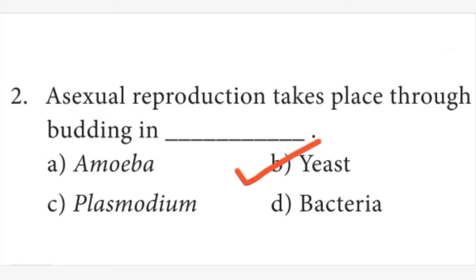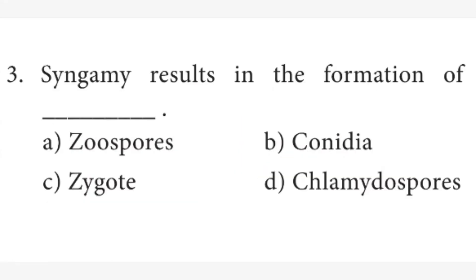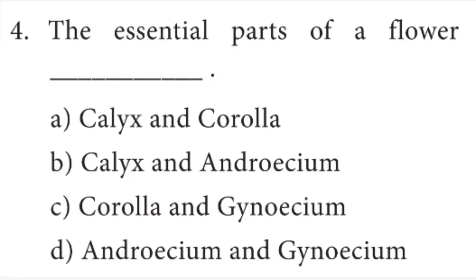Asexual reproduction by budding occurs in yeast. Third question: syngamy results in the formation of dash. Answer is C option, zygote. Syngamy results in the formation of a zygote, that is, a fertilized egg.